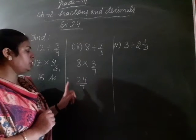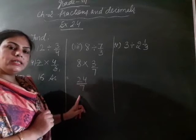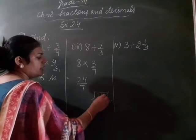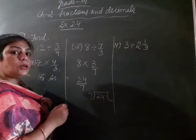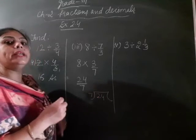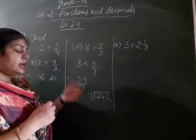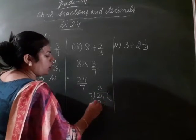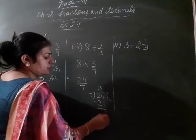Now this is improper fraction. Your numerator is greater than denominator. So convert into the mixed fraction. 7 threes are 21. 7 fours are 28... 7 threes are 21. 4 minus 1, that is 3.